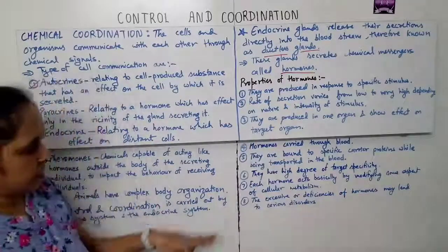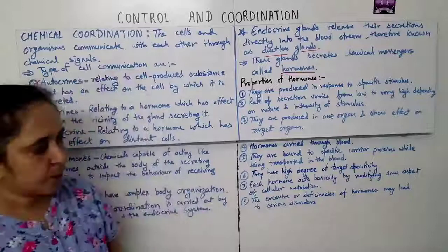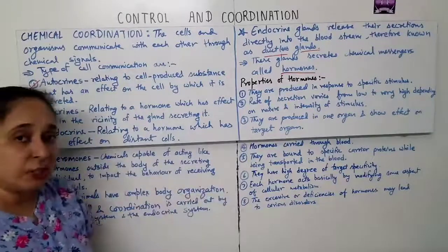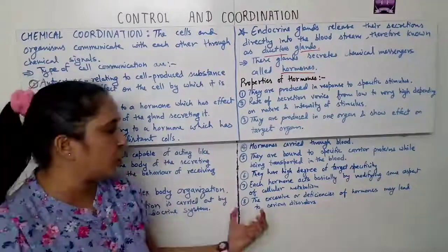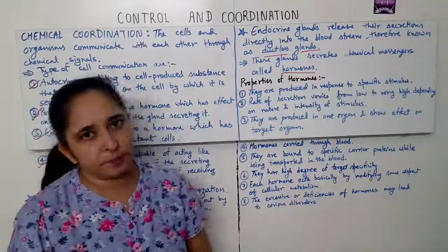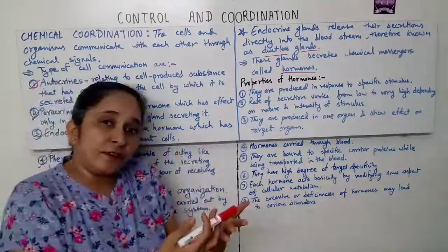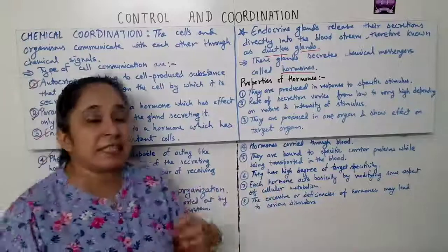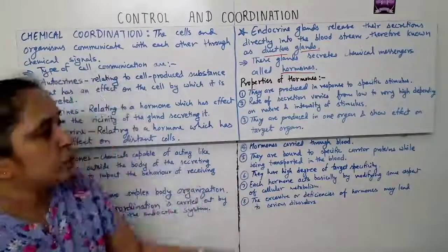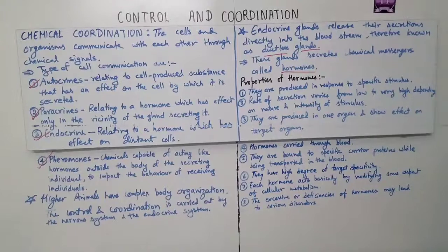Fourth, hormones are carried through the blood. Fifth, they are bound to specific carrier proteins while being transported in the blood. Sixth, hormones have a very high degree of target specificity. Seventh, each hormone acts by modifying some aspects of cellular metabolism. Finally, excessive release or deficiency of a hormone may lead to serious disorders.